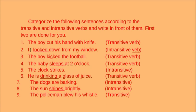Now, the subject is 'the boy,' the verb is 'cut,' and the direct object is 'his hand with his knife.' For 'I looked down from my window,' this is intransitive because 'I' is the subject, 'looked' is the verb, and 'down from my window' — it doesn't say I looked down to what.